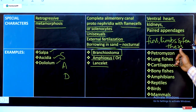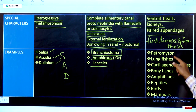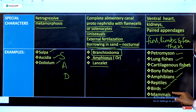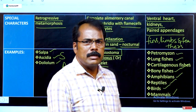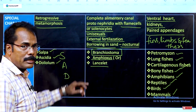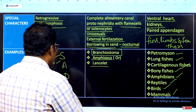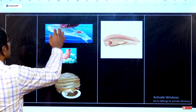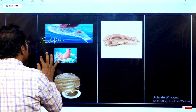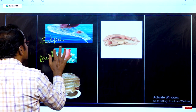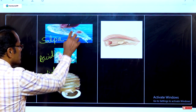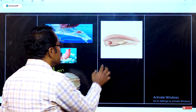In Vertebrata, many animals are included: Petromyzon, lungfishes, cartilaginous fishes, bony fishes, amphibians, reptiles, birds, and mammals. Pictures of Salpa, Ascidia, Doliolum, and Branchiostoma are shown for reference.